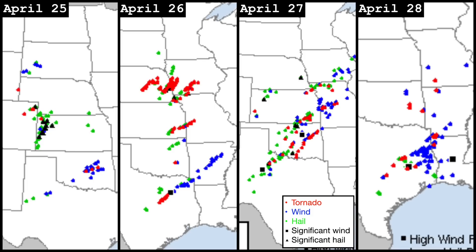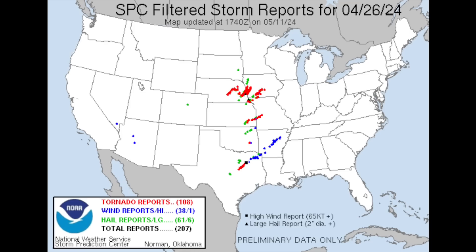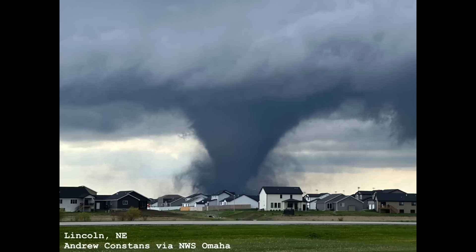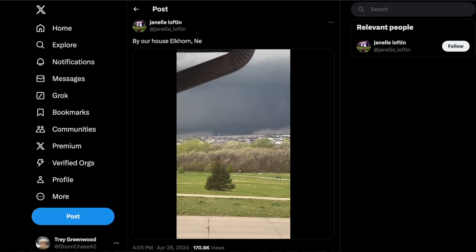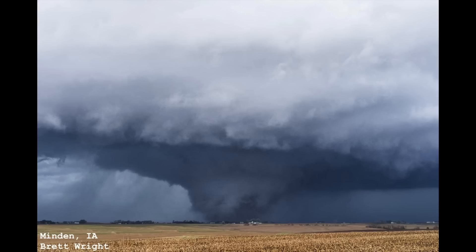A week passed before the beginning of another outbreak sequence, the most notable of the season and one that would kick off an extended stretch of hyperactive tornado activity. 164 tornadoes occurred over the four-day stretch from April 25th through 28th, with the 26th coming in as the most active day. 77 tornadoes, including several significant, occurred on the 26th alone, mostly across eastern Nebraska into western Iowa, including the Lincoln-Waverly, Nebraska EF3, the Elkhorn, Nebraska EF4, and the Minden, Iowa EF3.